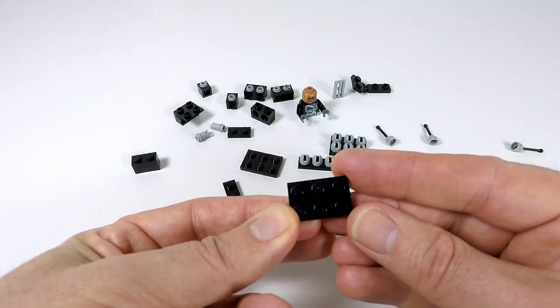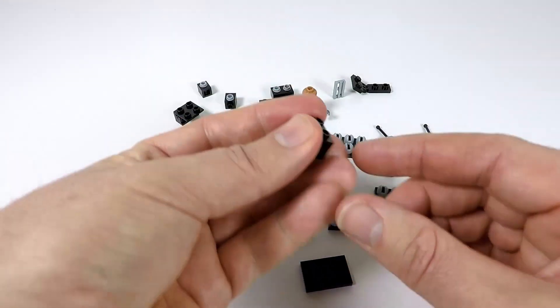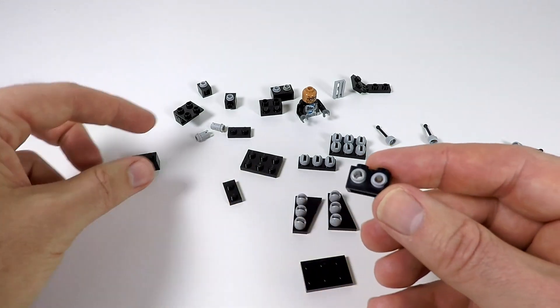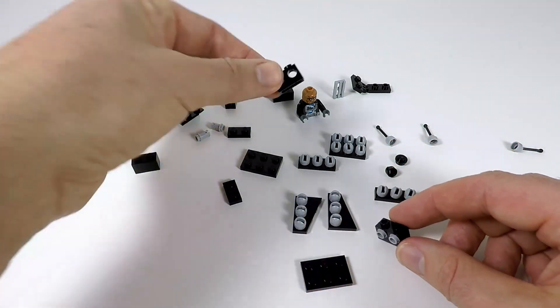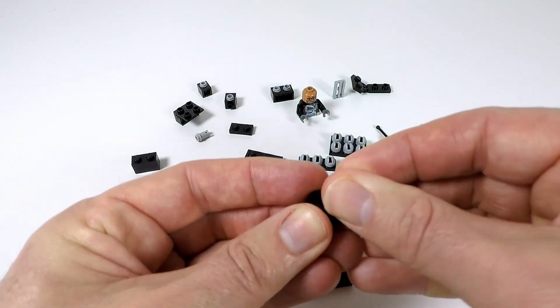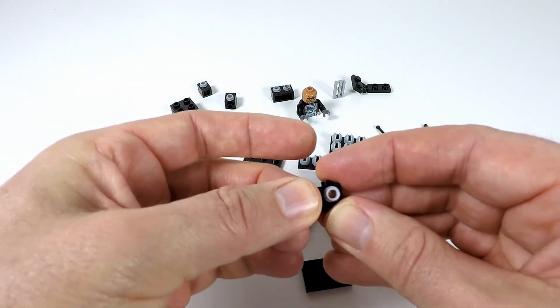We'll just have the 2x3 plate for a base. Oh, the other thing we need are these 1x2s with studs on side. Now, I don't actually have the proper black ones, so I've used these ones with holes, and I'm just using a few of these Technic half pins to go inside. So that's a little bit different too.